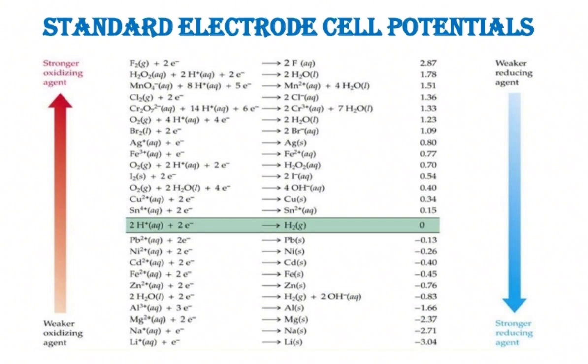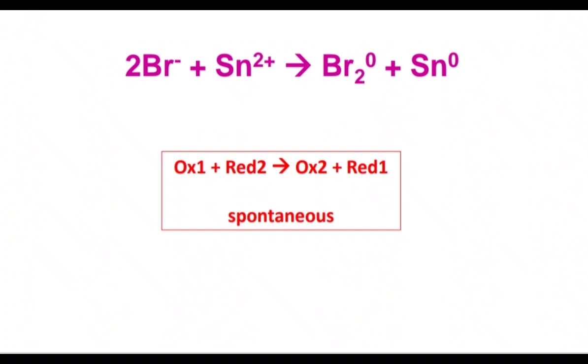Let's take this process: 2Br- + Sn2+ → Br2^0 + Sn^0. We see that bromine with a negative charge and stannum with the charge plus two convert into bromine zero and stannum zero. Bromine gives his electrons and becomes zero, so he's a reducing agent—he's oxidized.